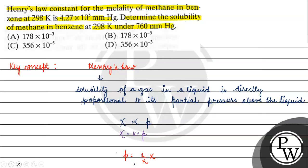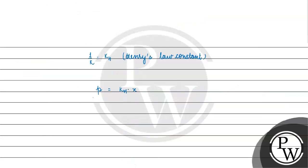Now, what have we been asked? We are given Henry's law constant value, we need to find solubility, and we have partial pressure. The pressure is 760 mmHg, and Kh is 4.27 × 10⁵ mmHg. So: 760 = 4.27 × 10⁵ × solubility.